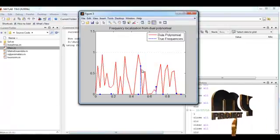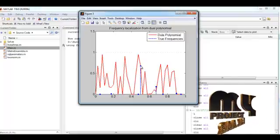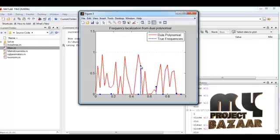This is the frequency localization from dual polynomial. Here the true frequencies are obtained up to this level and the particular waveform represents the dual polynomial localization frequency localization representation.